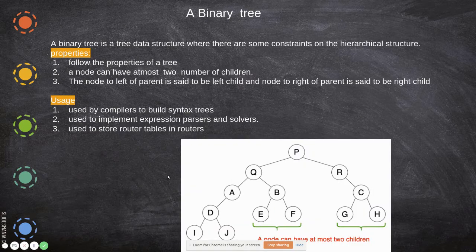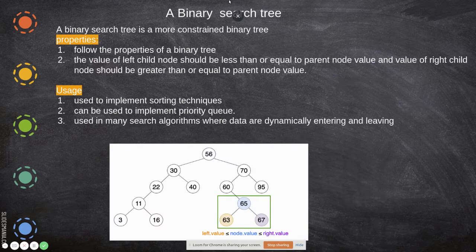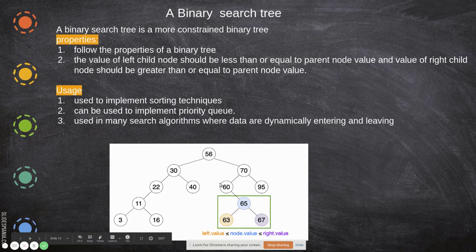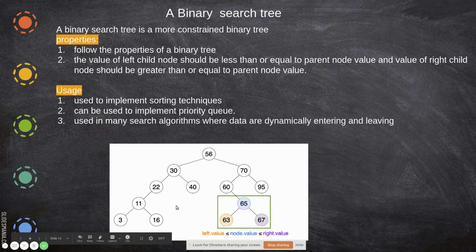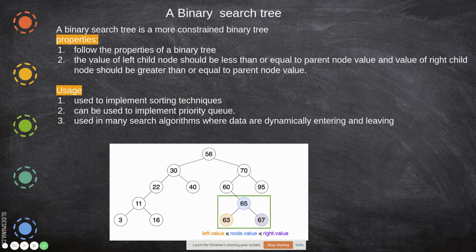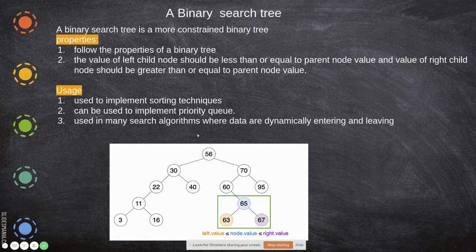Binary search tree is used to implement sorting techniques, since the automatic arrangement aids sorting. It can be used to implement priority queues, where the element with the highest priority is made the parent. It is also used with many search algorithms where data is dynamically entering and leaving.